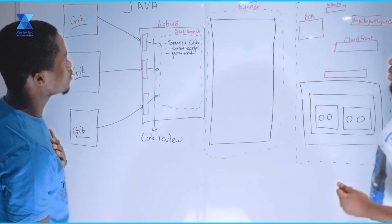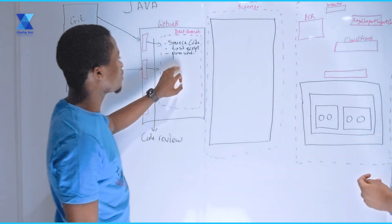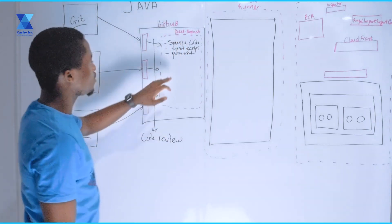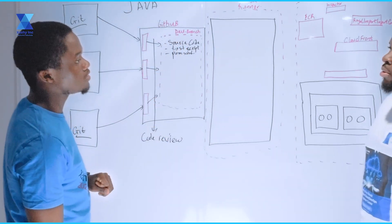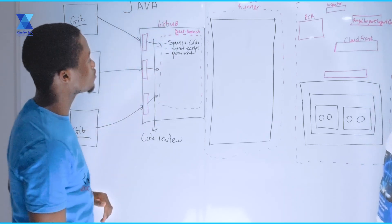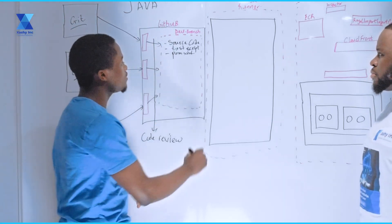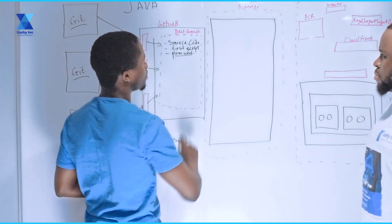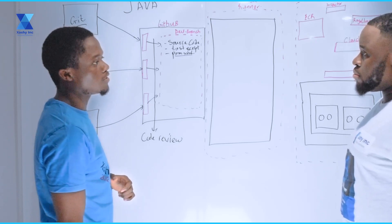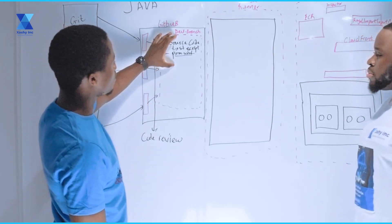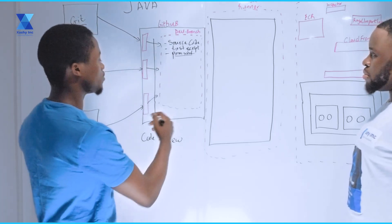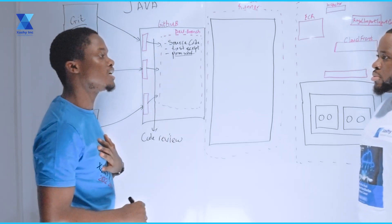So what's the purpose of the pom.xml? During our build process, we're going to be making use of Maven to actually build this application — this is a Java-based application so we use Maven to build it. Maven runs using a pom.xml file, that is why the pom.xml file is a requirement for us. This is what is required of our developers.